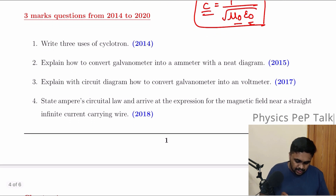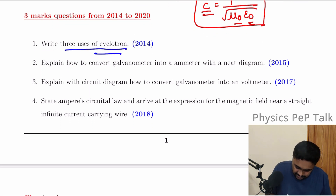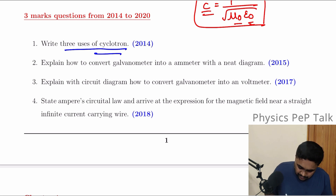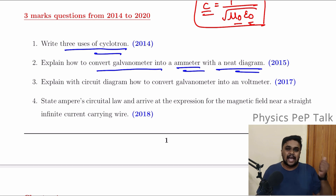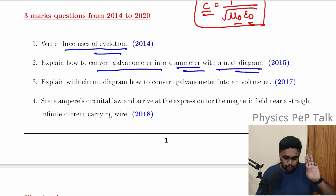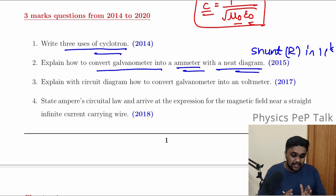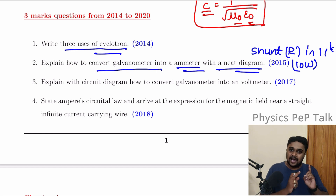Three marks questions: Write the three uses of cyclotron. Explain how to convert a galvanometer into an ammeter with a neat diagram. Galvanometer into ammeter and galvanometer into voltmeter are very important — 3 marks. Just by connecting a shunt resistor in parallel, we can convert a galvanometer into an ammeter.